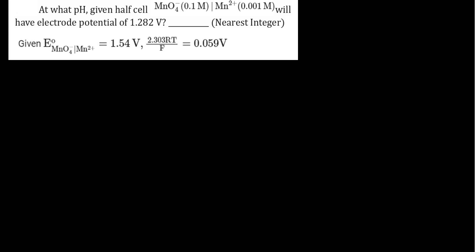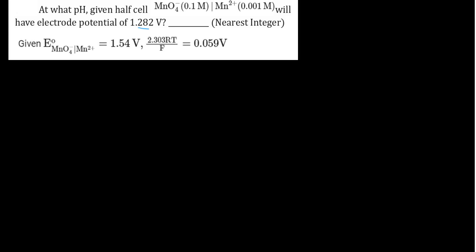Hello students, in this question we have to find out the pH at which the electrode potential for a given half cell is 1.282 volt. So this voltage when E-cell is given for half cell, what pH will we find?